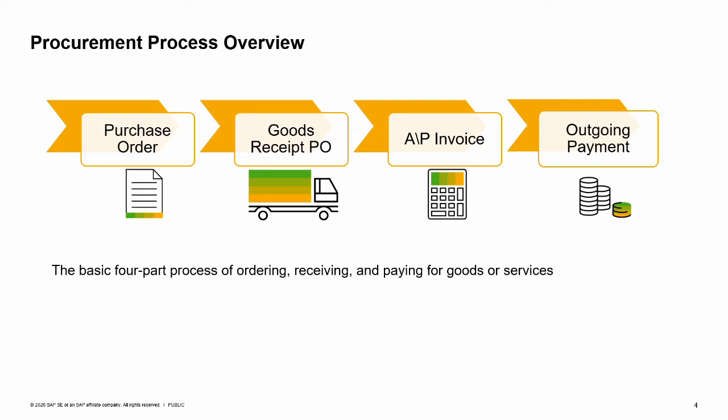As a fully integrated, end-to-end business management application, SAP Business One helps you run the purchasing process, starting with the purchase order and continuing with the rest of the purchasing documents. SAP Business One automatically captures information at each step, so you always know what is on hand in inventory as well as the up-to-the-minute financial state of your business.